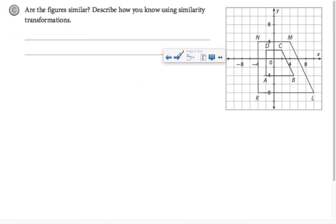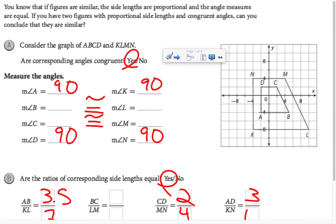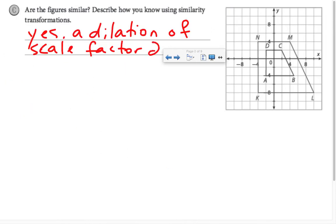Are the figures similar? Yes, because a dilation of scale factor 2 would map ABCD to KLMN.